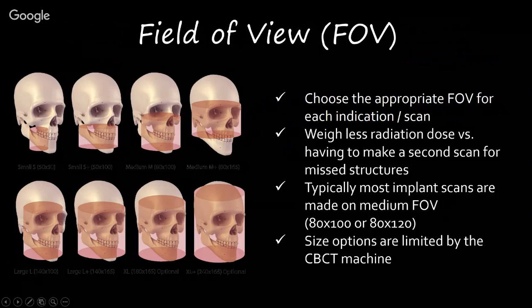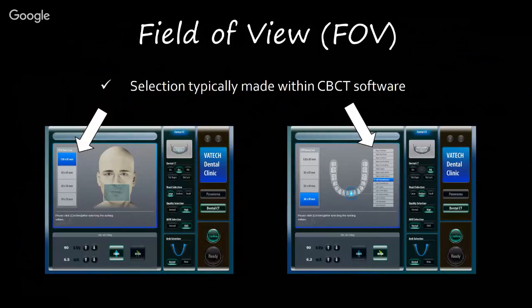I 100% recommend purchasing the largest field of view you can afford. The smallest I would recommend for a clinician doing a fair amount of implant surgery is a 12×9 or a medium field of view depending on your scanner. The field of view selection is made within your cone beam scanner, which allows you to dynamically change it. The only time I'd use something very small is if I'm trying to find cracks or fractures within teeth.